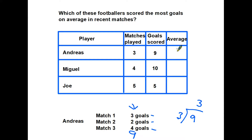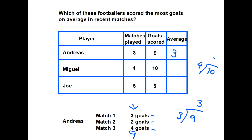To work out Andreas's average score per match, we take nine divided by three and get three. Miguel has actually scored more goals than Andreas — ten compared to nine — but he's also played in more matches. When we take ten divided by four, the answer is 2.5. So Miguel's average of 2.5 is actually lower than Andreas's three, simply because he's played in more matches.